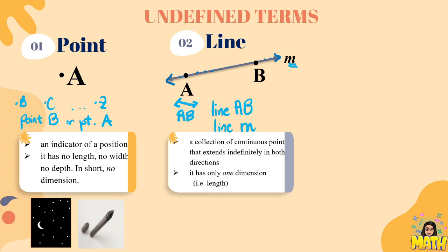Another way to name a line is to use only one letter which is a small letter. So this one is also called line M. Kapag magpapangalan ng line using one letter, make sure na small letter ito. But usually, a line is named using two points on it.